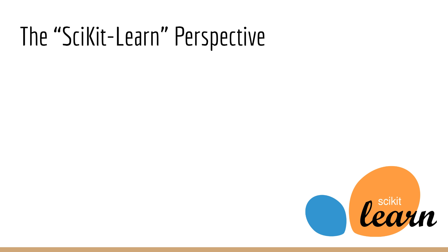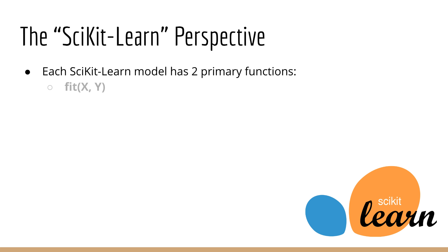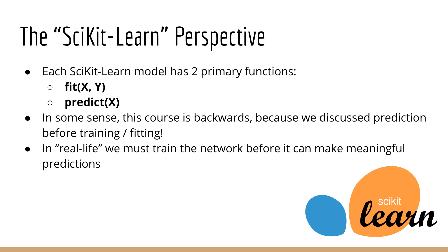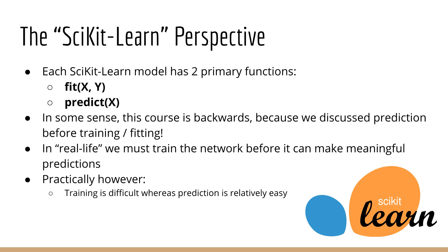For those of you who are familiar with scikit-learn, here's another perspective. You know that a supervised machine learning model in scikit-learn has two primary functions: fit(X, y) and predict(X). Fit is for training the model, and predict is for making new predictions using the trained model. In some sense, what we've done in this course is backwards because we discussed prediction before training. But in real life, you would have to train the neural network before making any meaningful predictions. Training is difficult, whereas making predictions is relatively easy.